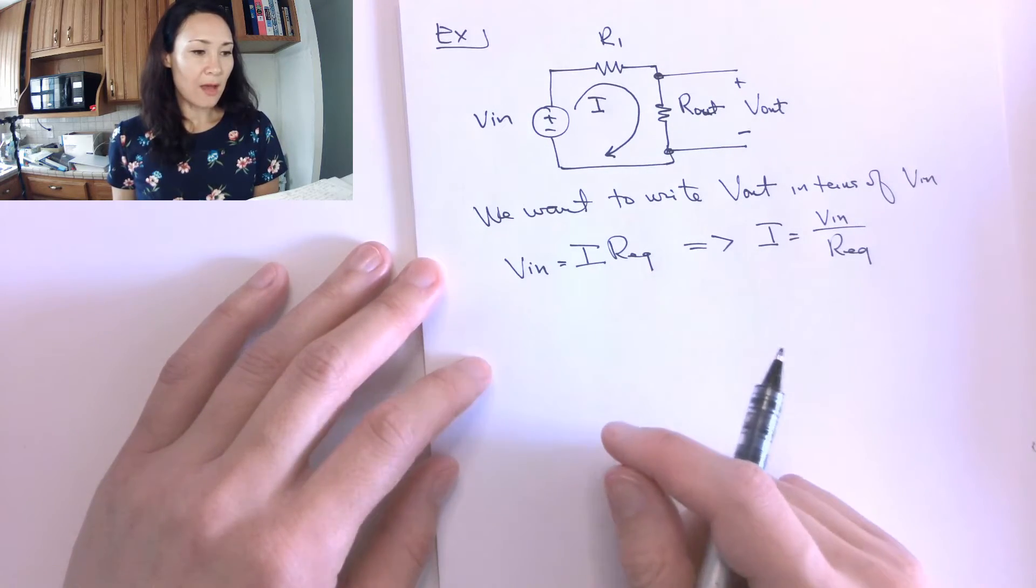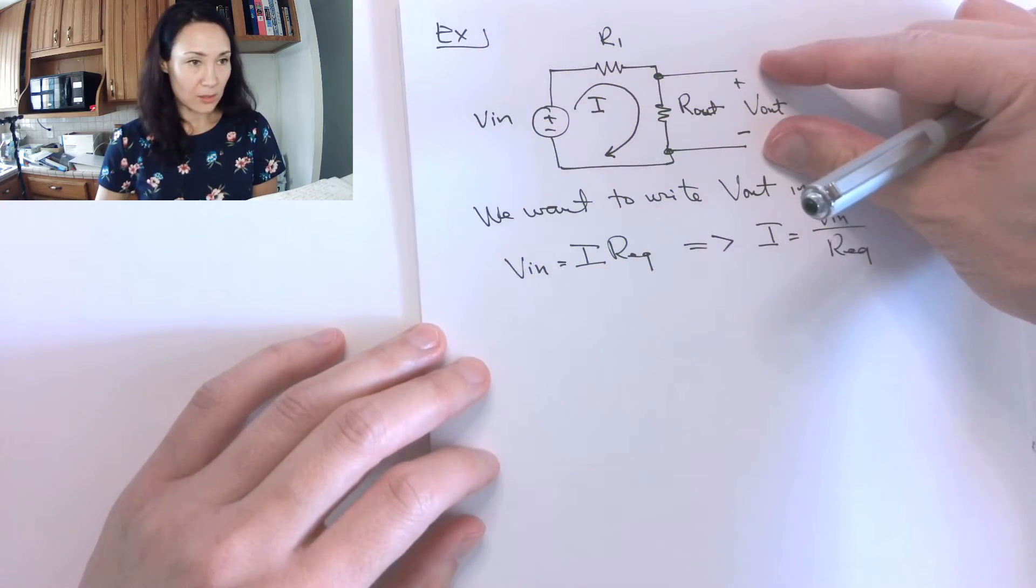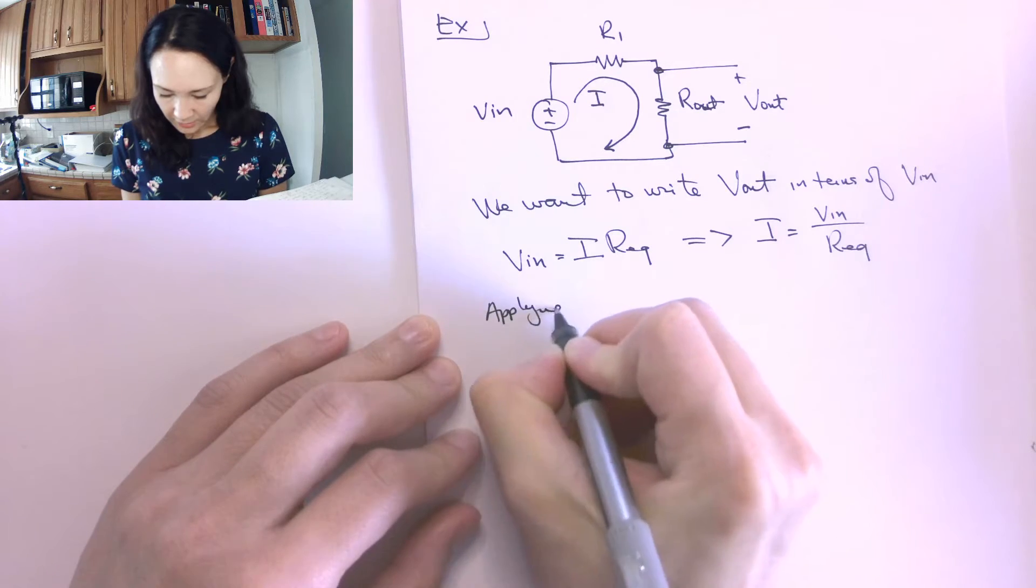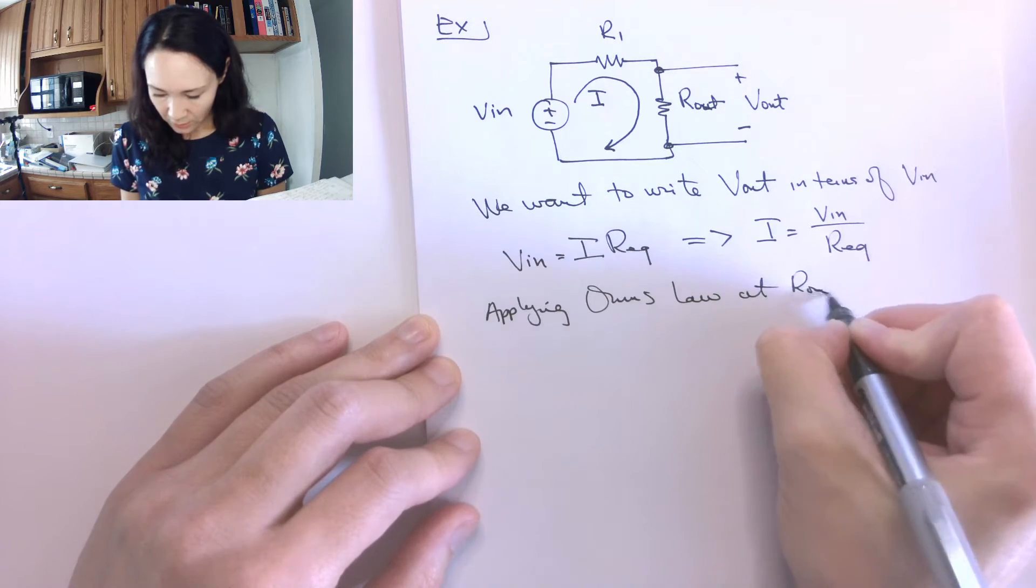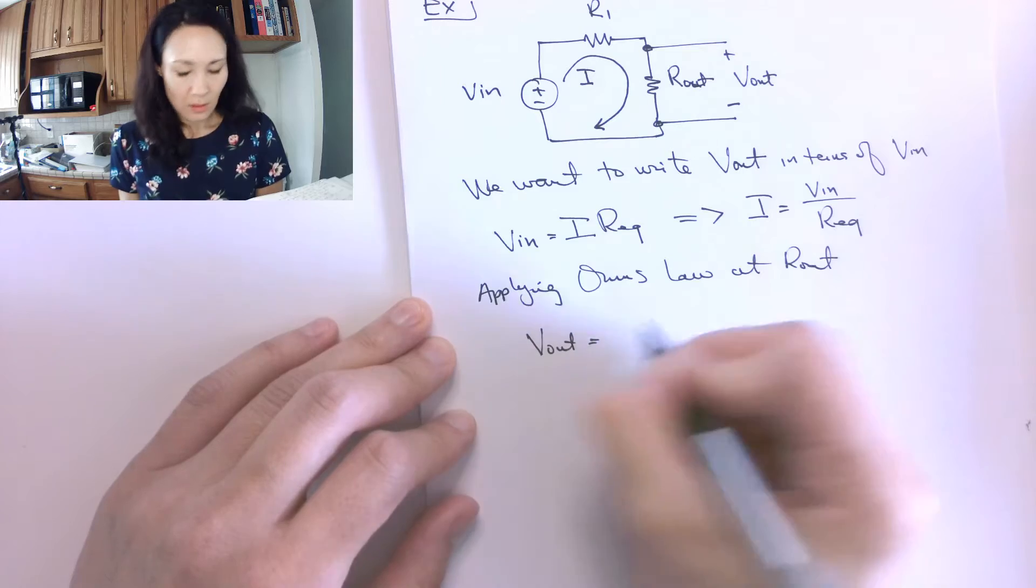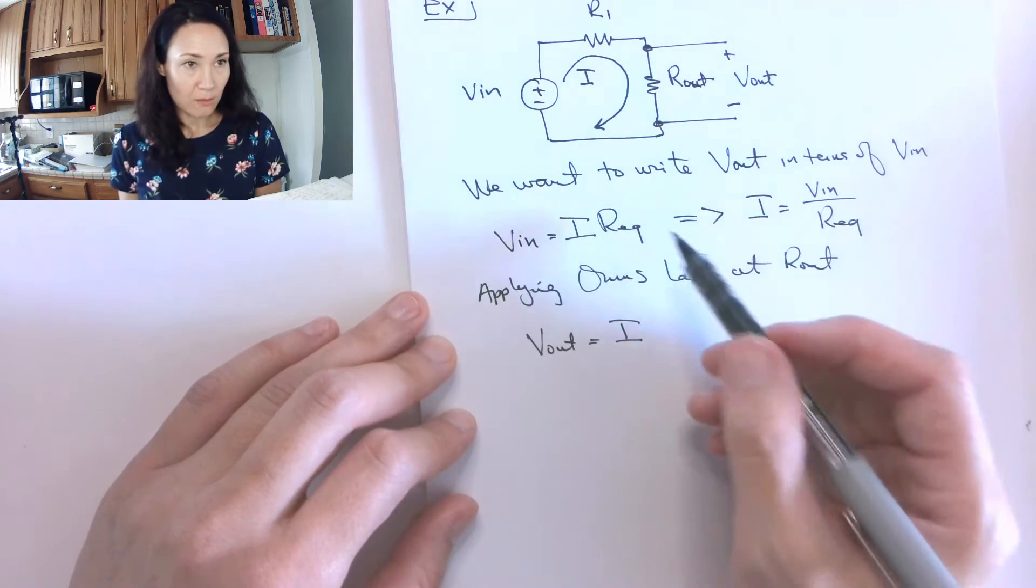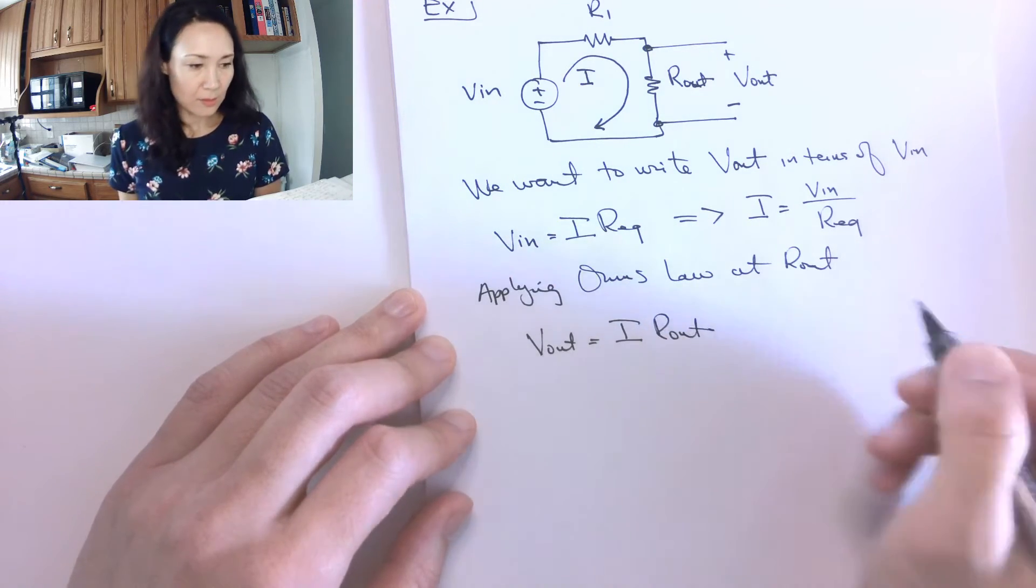Then v out, if we apply Ohm's Law at this output resistor here, applying Ohm's Law at r out gives us that v out is equal to the same i as here, because this is a series circuit, times r out.